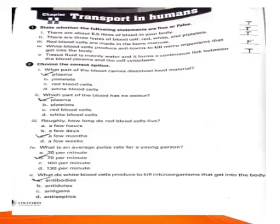Choose the correct option. What part of the blood carries dissolved food material? Plasma. Which part of the blood has no color? Plasma. Roughly how long do red blood cells live? A few months. What is an average pulse rate of a young person? 70 per minute. What do white blood cells produce to kill microorganisms that get into the body? Antibodies.